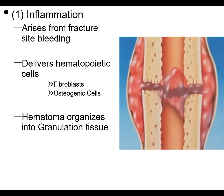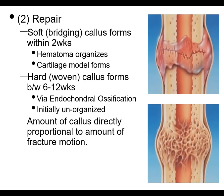In the inflammatory phase, you get bleeding — essentially a fracture hematoma. This is where you see bruising if it's a subcutaneous fracture. There's a big hematoma that fills the space, and that delivers hematopoietic cells including osteogenic cells. Eventually this hematoma can organize into so-called granulation tissue. In the reparative phase, you first get the soft bridging callus, where you start to get endochondral ossification — a cartilage model forms, the hematoma organizes, and that eventually turns into a hard, so-called woven callus.